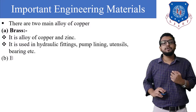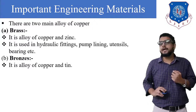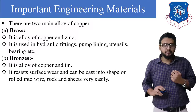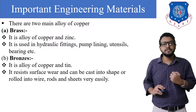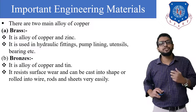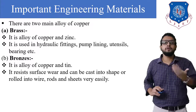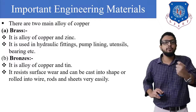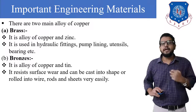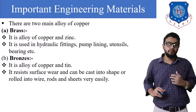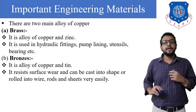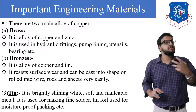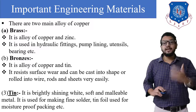Next is bronze. It is an alloy of copper and tin. It resists surface wear and can be cast into shapes and rolled into wires, rods, and sheets very easily. Bronze has good castability.